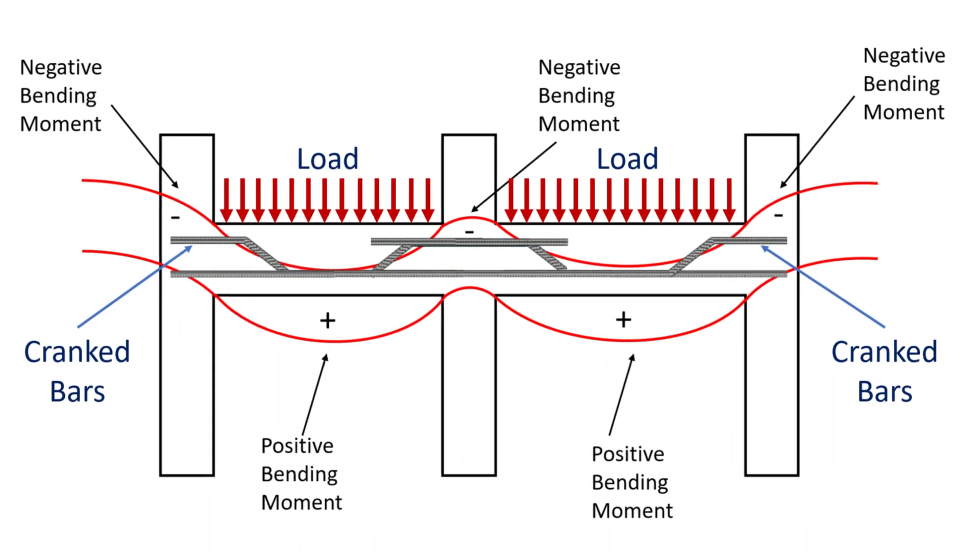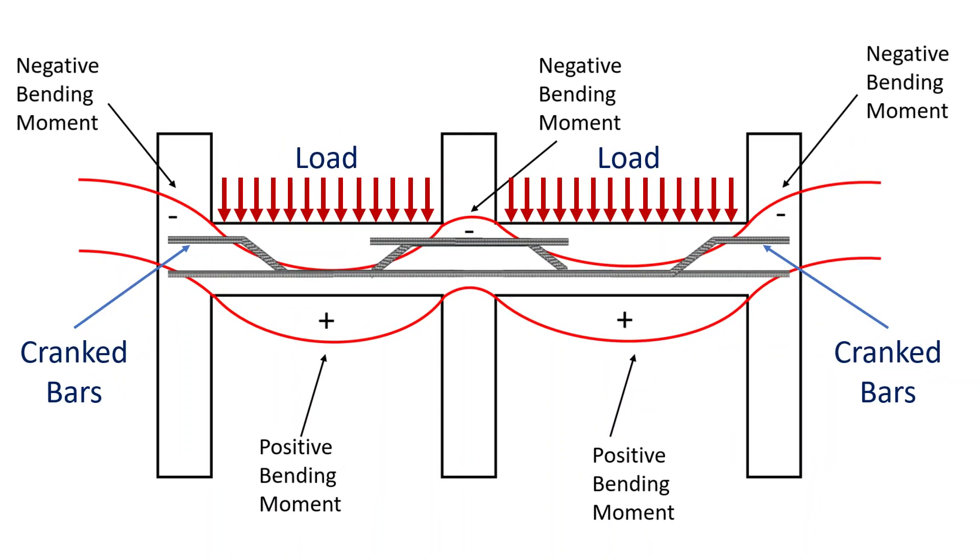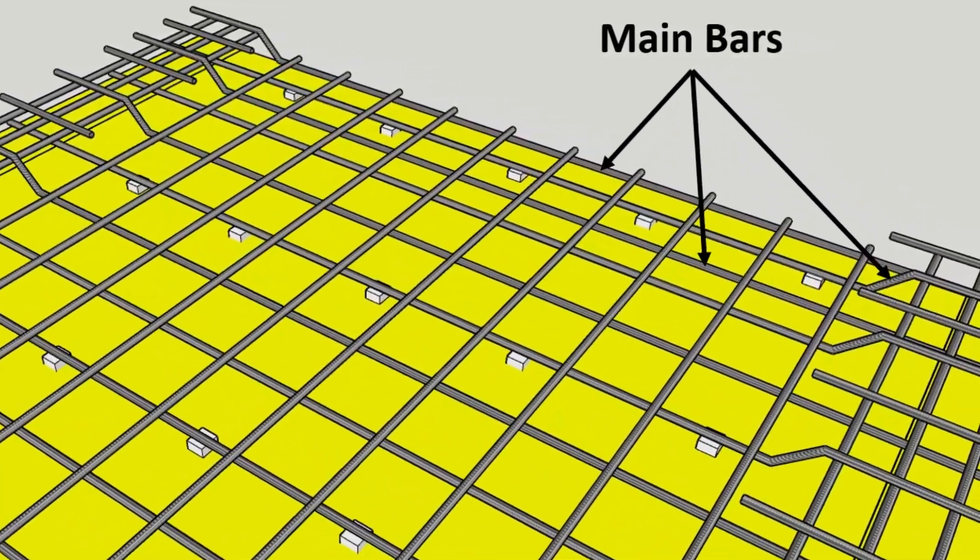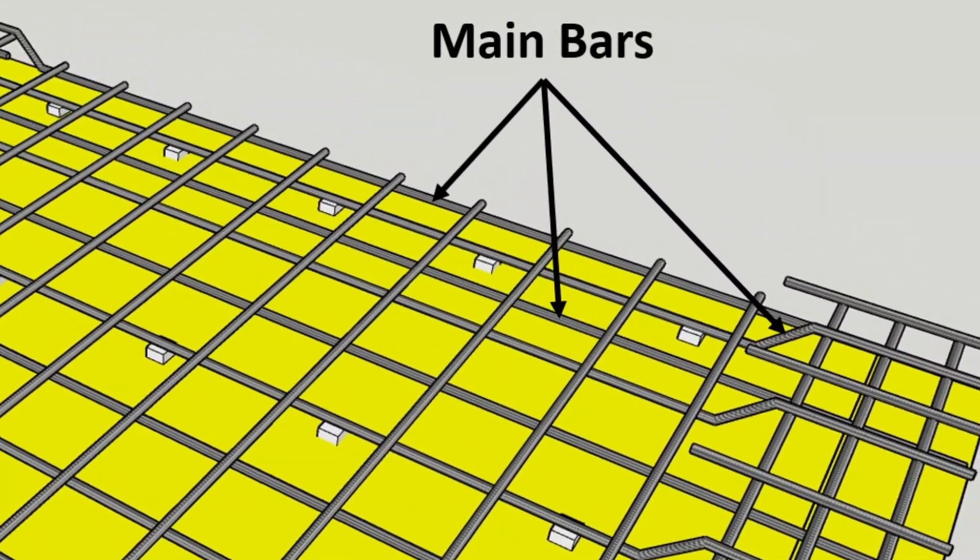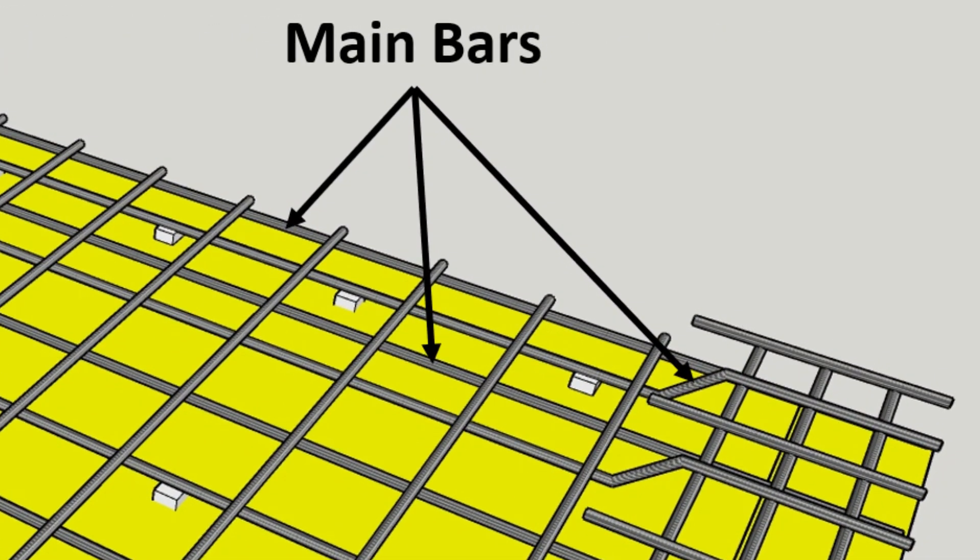Cranked bars are provided in RCC members to resist negative bending moments. These bars are provided in slabs as well as in beams since these members are subjected to tensile stresses.